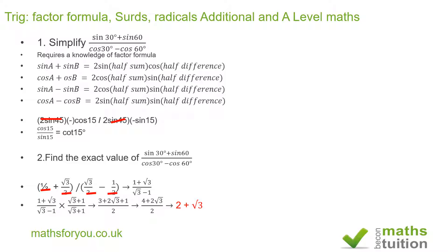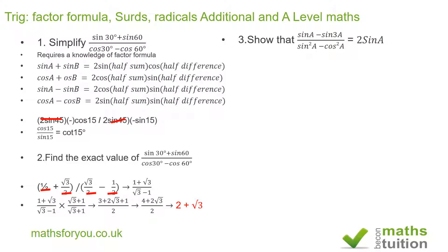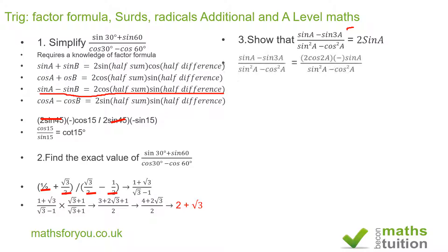For the third question we need to show that sin A minus sin 3A, divided by sin squared A minus cos squared A, equals 2 sin A. For the numerator we apply the appropriate factor formula. This gives 2 cos 2A times sin(minus A), because A plus 3A = 4A, halved gives 2A; and A minus 3A = minus 2A, halved gives minus A.